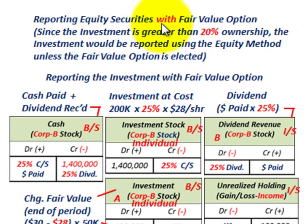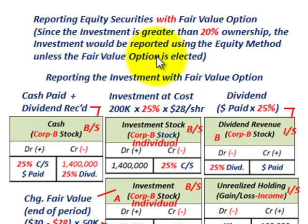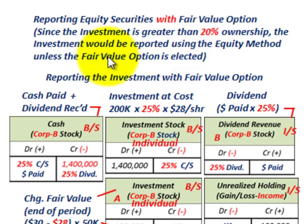Reporting these equity securities with the fair value option: since this investment is greater than 20% ownership, the investment would normally be reported using the equity method, unless the fair value option is elected — and that's what we're looking at. You could elect this fair value option with really any percent of ownership; if it was less than 20%, you could still elect it.